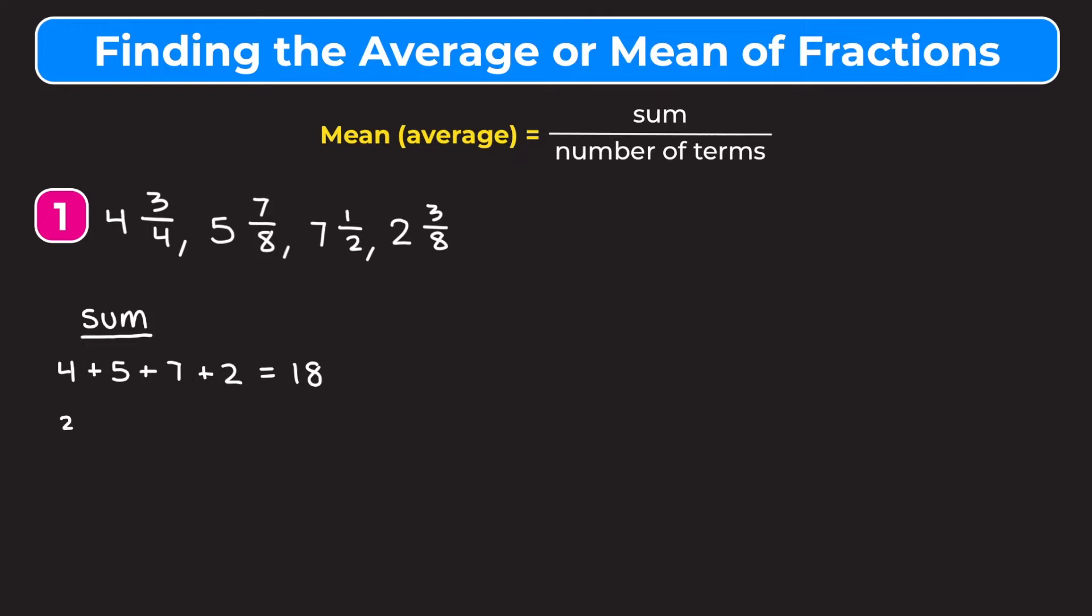And then we're going to have to add up the fraction parts. So we have three fourths plus seven eighths plus one half plus three eighths. And remember when we are adding fractions, we have to make them have a common denominator. So the least common denominator of two, four, and eight is going to be eight.